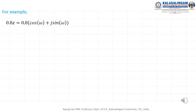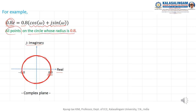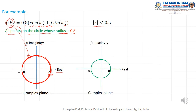For example, there is one signal where Z equals 0.8. This means 0.8 times (cos omega plus J sin omega), represented in the complex domain with real and imaginary axes — one circle whose radius equals 0.8. This means all points on that circle. And Z less than 0.5 means, in the complex domain, the interior of the circle whose radius equals 0.5.